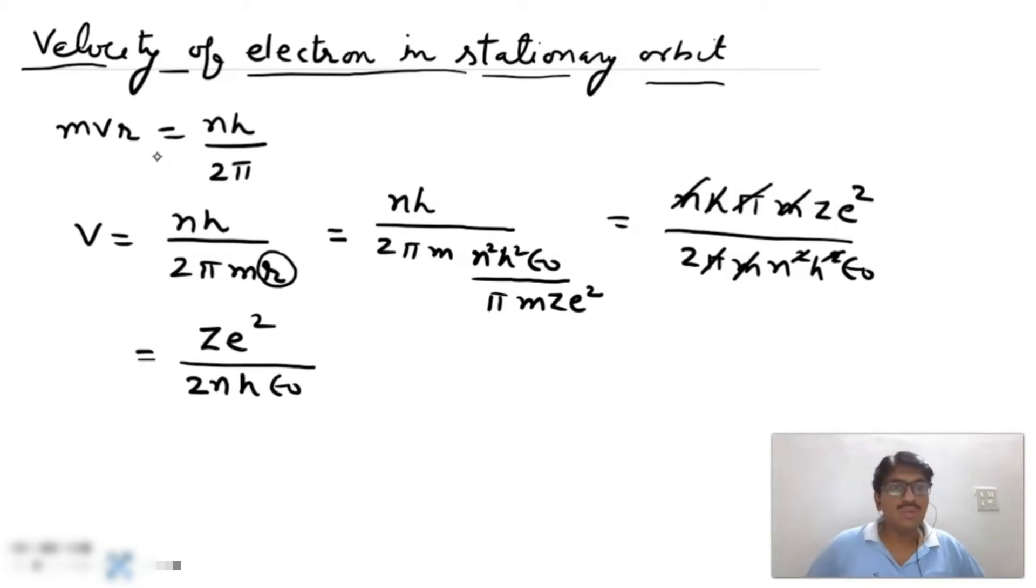And here for hydrogen atom Z is 1, e is electronic charge, h is Planck constant. It means velocity of electron in orbit is inversely proportional to n, inversely proportional to the number or order of orbit.